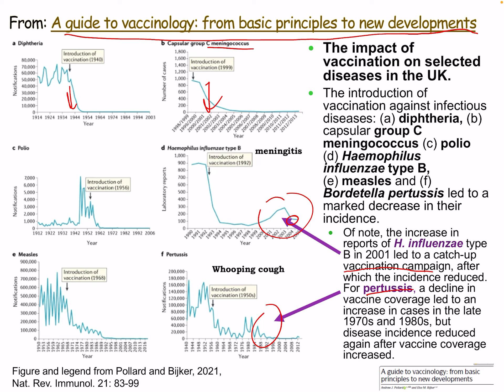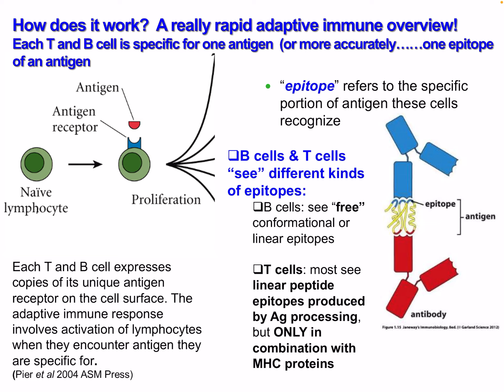These diseases can come back if we let up with vaccinations — this is very relevant with people who are anti-vax or don't get their children vaccinated. Each T and B cell is specific for one antigen, or more accurately, one epitope. An epitope refers to the specific portion of the antigen that these cells recognize. B cells see free conformational or linear epitopes, while most T cells see linear peptide epitopes produced by antigen processing, but only in combination with MHC proteins.